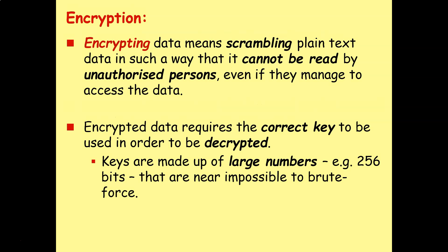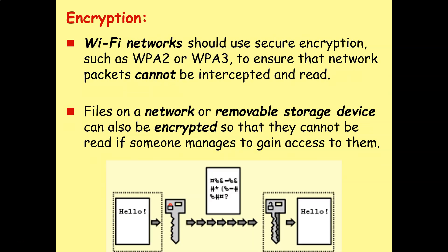Encryption means scrambling plain text data in such a way that it cannot be read by unauthorized persons, even if they manage to access the data. Encrypted data requires the correct key to be used in order to be decrypted. Keys are made up of very large numbers, for example 128 or 256-bit, that are near impossible to brute force. Wi-Fi networks should use secure encryption, for example WPA2 or WPA3, to ensure that network packets cannot be intercepted and read. Files on a network or removable storage device can also be encrypted so they cannot be read if somebody manages to gain access to them — so even if your network is hacked, the data that is stolen should be worthless because unauthorized people cannot read it.